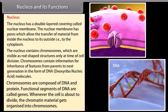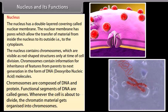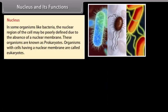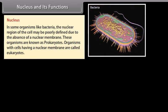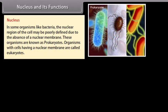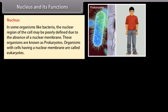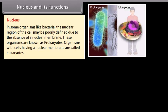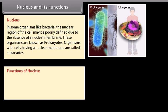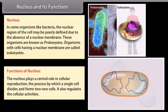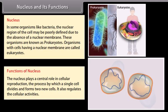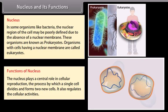Chromosomes are composed of DNA and protein. Functional segments of DNA are called genes. Whenever the cell is about to divide, the chromatin material gets organized into chromosomes. In some organisms like bacteria, the nuclear region of the cell may be poorly defined due to the absence of a nuclear membrane — these organisms are known as prokaryotes. Organisms with cells having a nuclear membrane are called eukaryotes. The nucleus plays a central role in cellular reproduction — the process by which a single cell divides and forms two new cells — and it also regulates cellular activities.